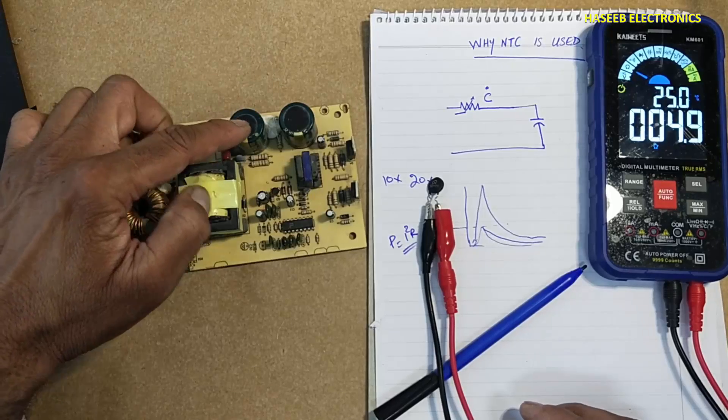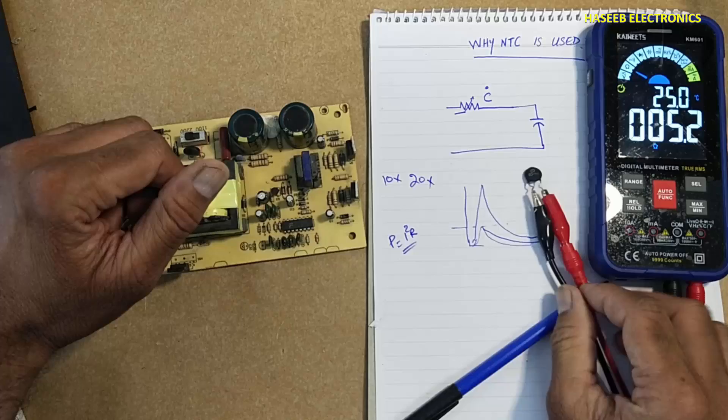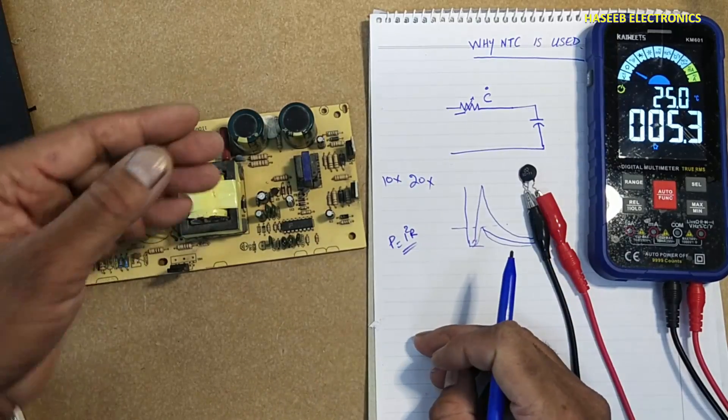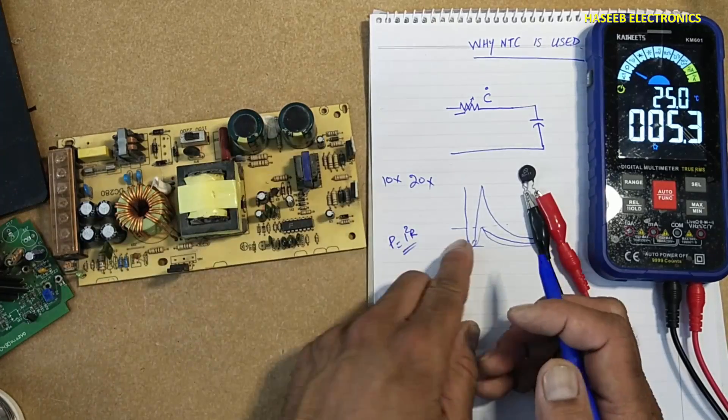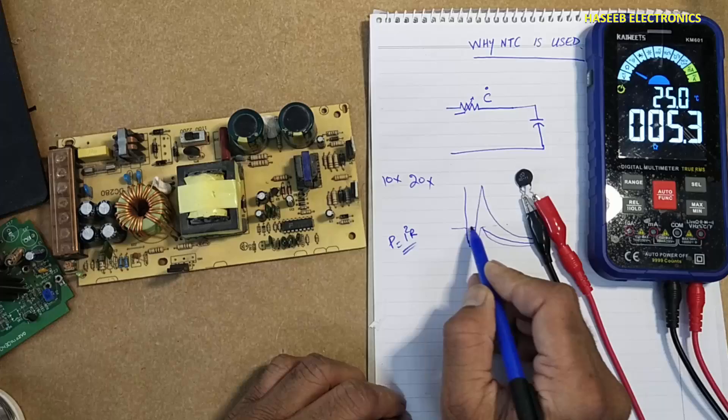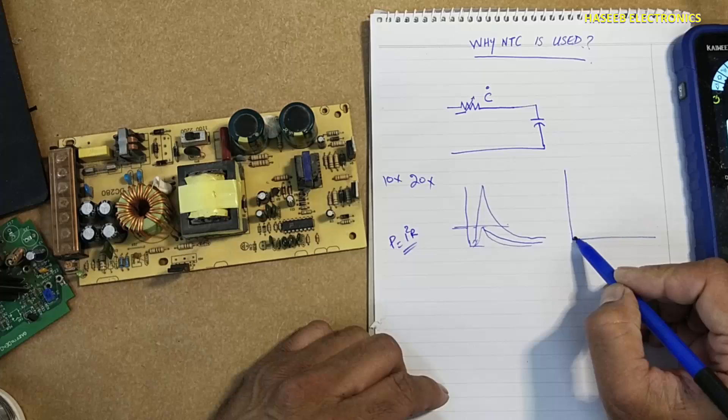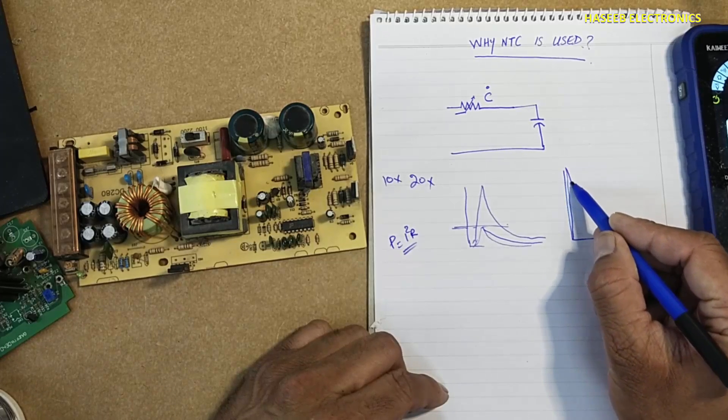So this is NTC, negative temperature coefficient. When power is applied, the system started to draw current. It will limit this current which capacitor needs for initial starting. This is capacitor voltage. When it is connected, it will draw heavy current like this, then it will become to normal.